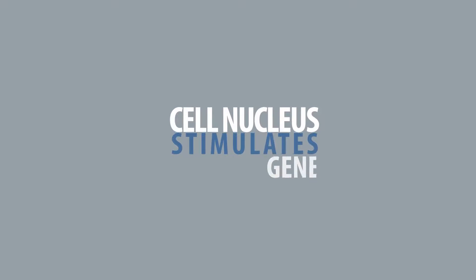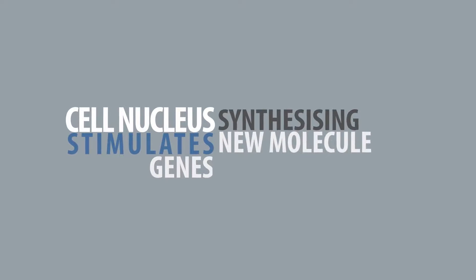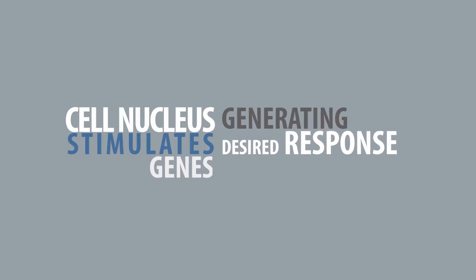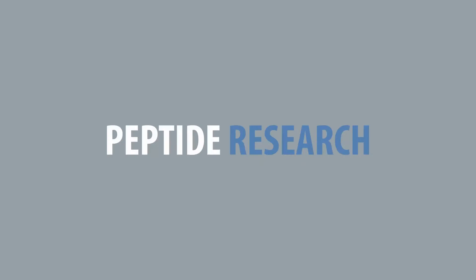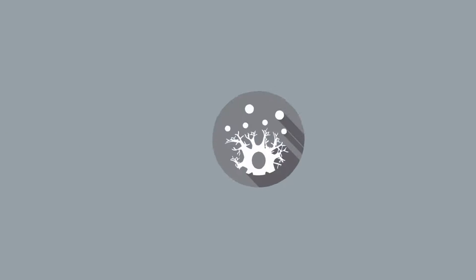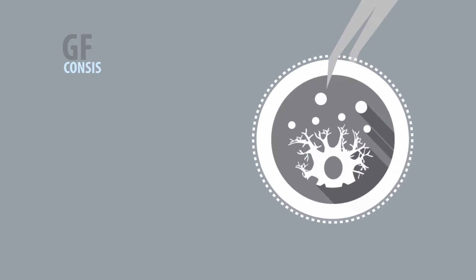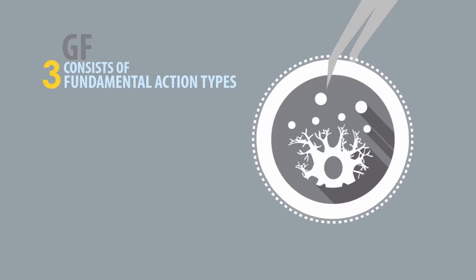This means that the information reaches the cell nucleus and stimulates specific genes for synthesizing a new molecule, ultimately generating the desired response. Peptide research has revealed that several of the GFs that RCT is using consist of three fundamental action types: one, stimulation; two, regulation; three, inhibition.